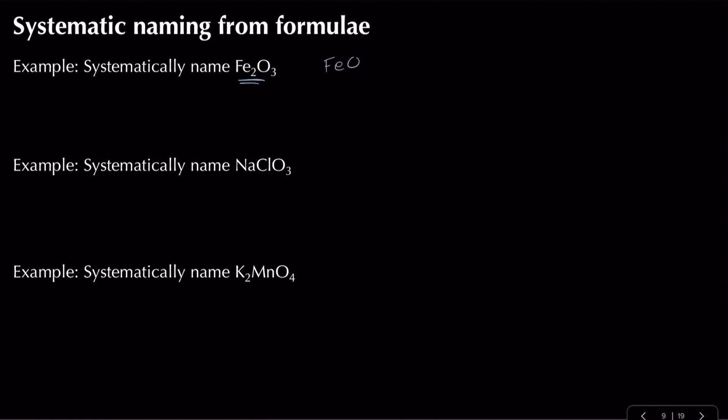We need to give the oxidation state of iron within the name itself. Thinking back to oxidation state rules: oxygen is minus two, three lots of them gives minus six. To get from minus six to zero overall, I need plus six split amongst two iron atoms — that's plus three each.